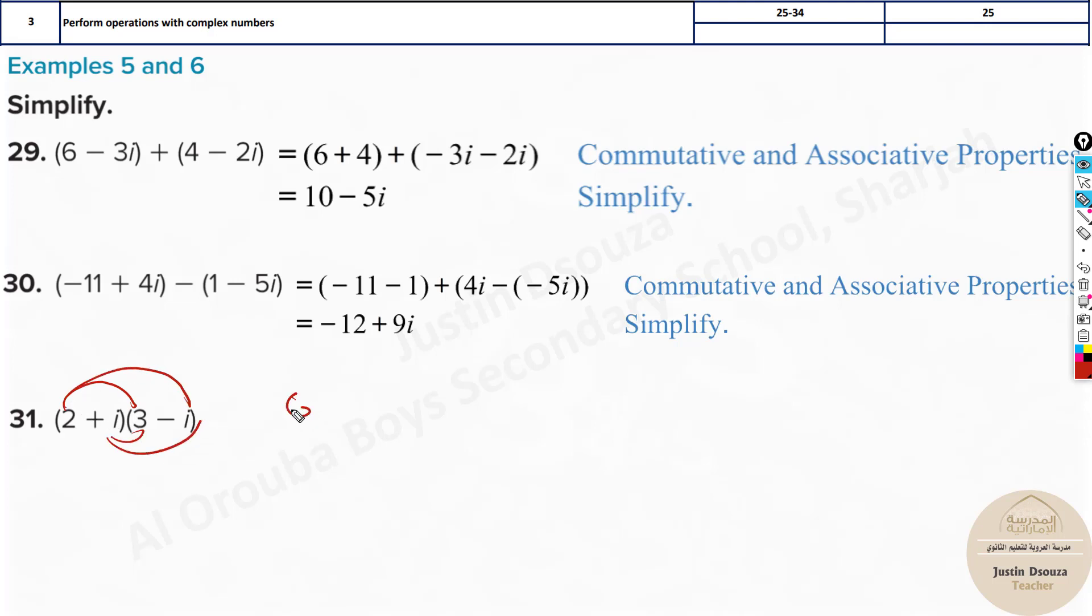So what happens is 2 times 3 is 6, minus 2 into i is minus 2i, plus 3i, minus i times i is i squared. Now you can simplify: it will be 6 plus i.